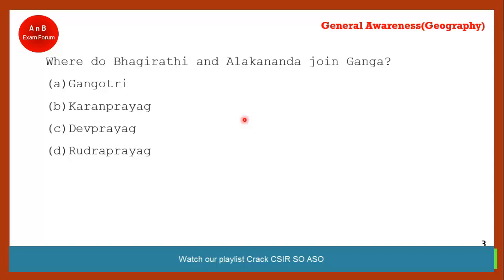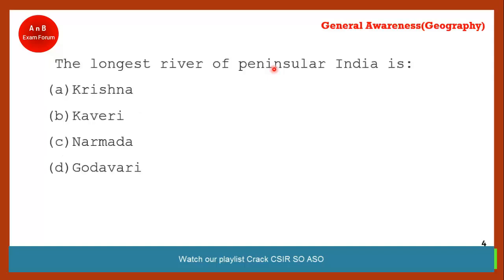Where do Bhagirathi and Alaknanda join to form the Ganga? I had shown you a diagram about this. The correct answer is option C — Dev Prayag. At Dev Prayag, Bhagirathi and Alaknanda join. Students who could not answer this question, I strongly recommend watching our playlist on 'Rivers of India understood using a map.'